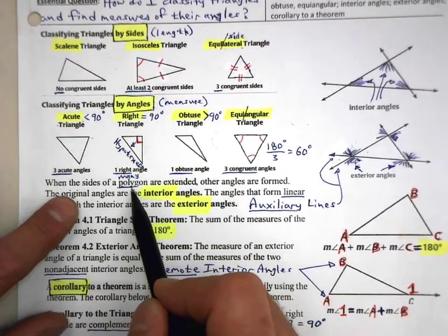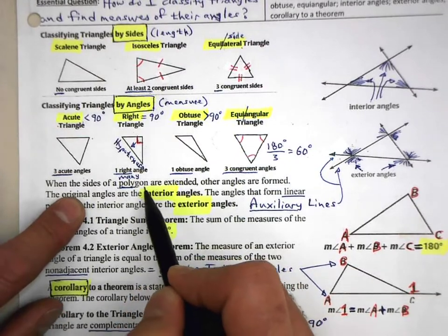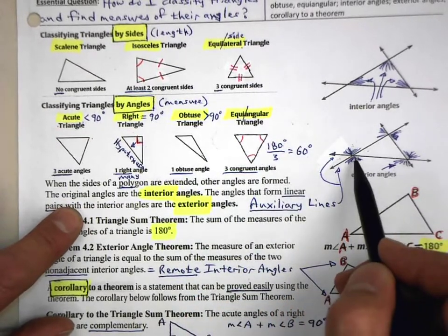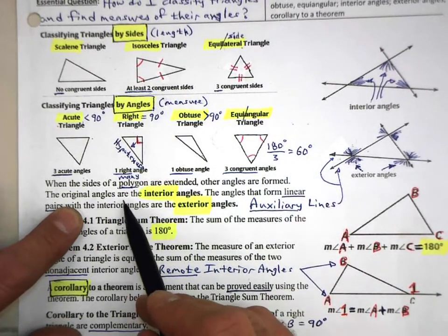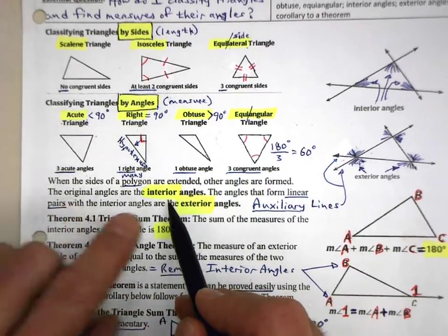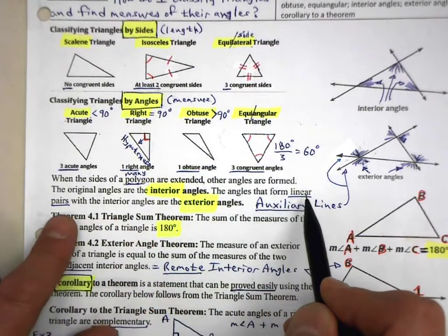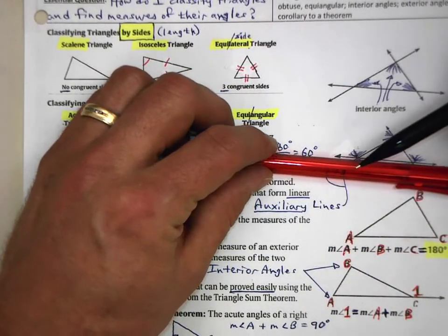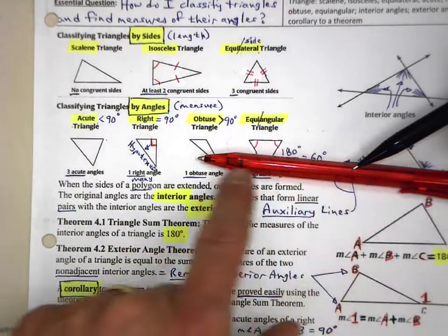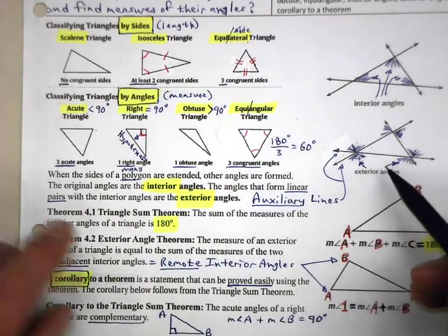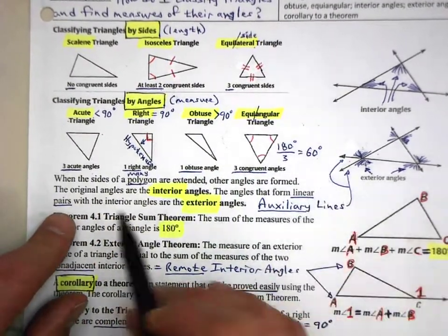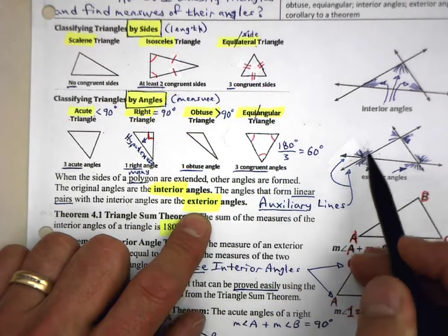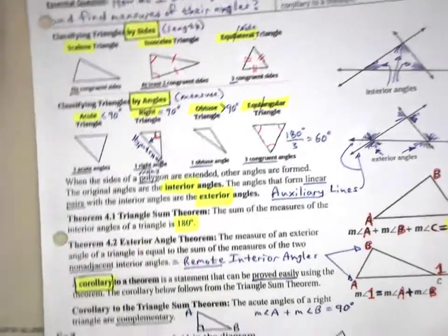When the sides of a polygon — 'poly' means many, 'gon' means side, so a many-sided closed figure — are extended, other angles are formed. That's what we're talking about with the auxiliary lines. The original angles are the interior angles; the angles that form linear pairs with the interior angles are exterior angles. Remember a linear pair? We have a line that comes out, and a pair of angles that create a line — those are linear pairs. The angles that form linear pairs with the interior angles are exterior angles.